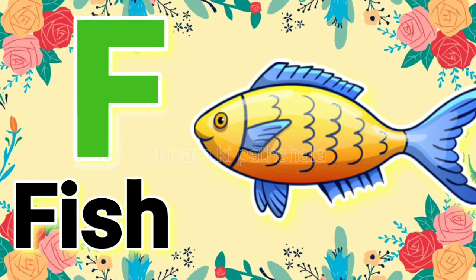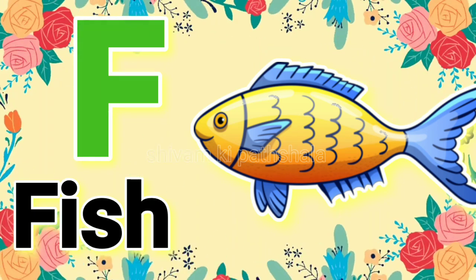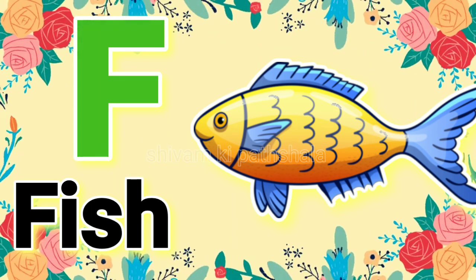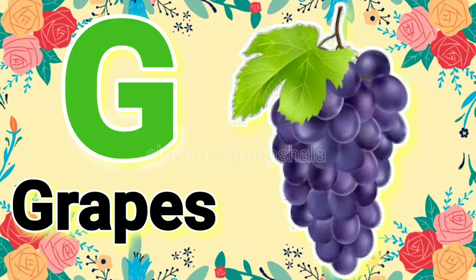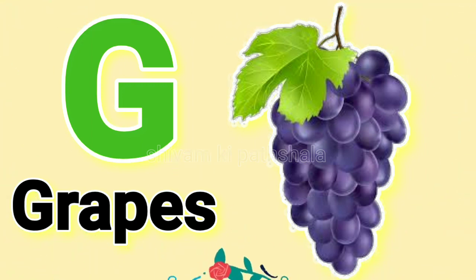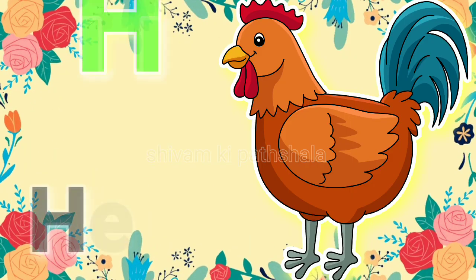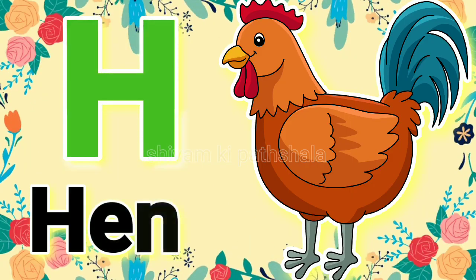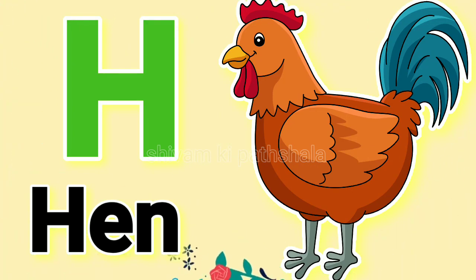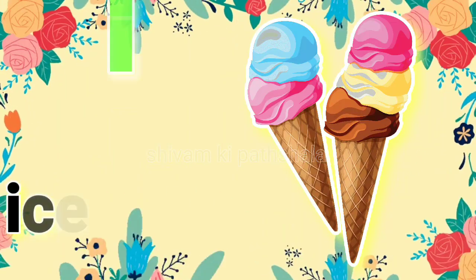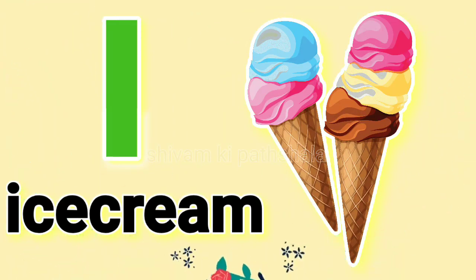F for trees. G for crabs. H for hen. I for ice cream.